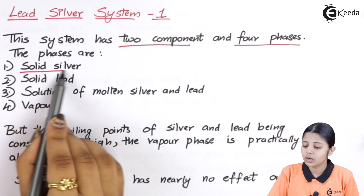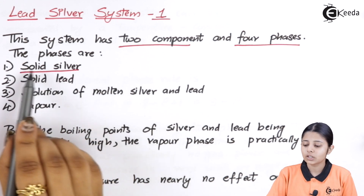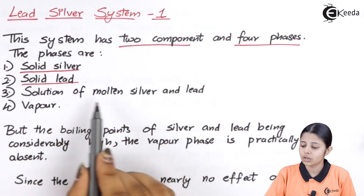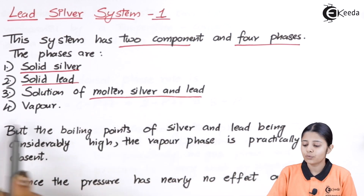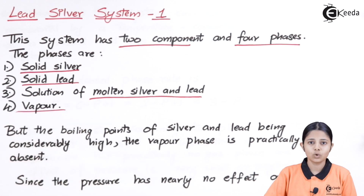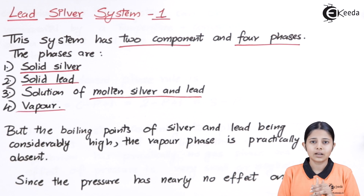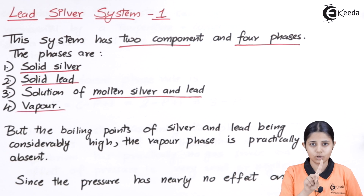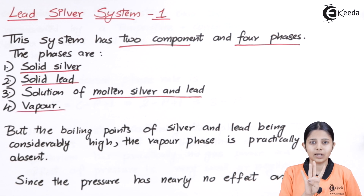The first phase is solid silver (Ag). The second is solid lead (Pb). The third is a solution of molten silver and lead — both in liquid phase. The fourth phase is the vapor phase. So we get all three states: solids, liquids, and gases. The fourth phase arises because there are solids of two distinct components — solid Pb, solid Ag — plus their combined liquid form and gaseous form, making this a two-component, four-phase system.